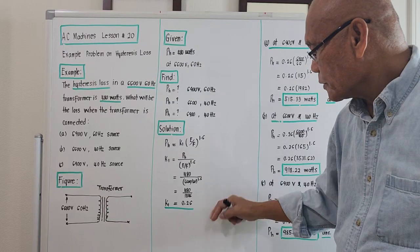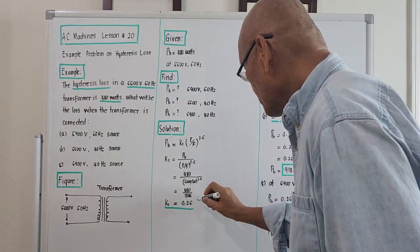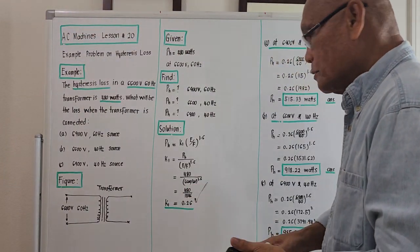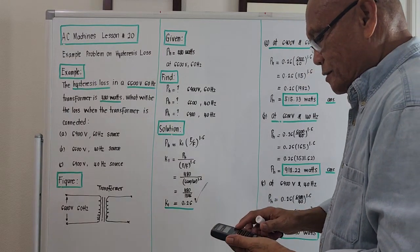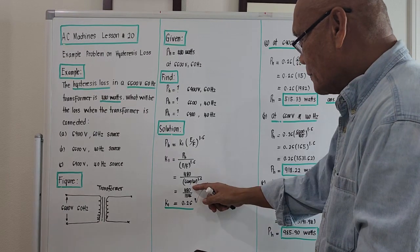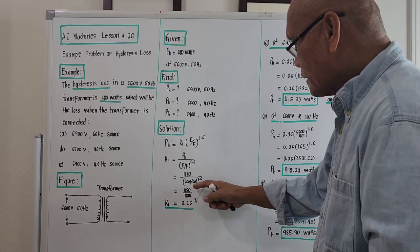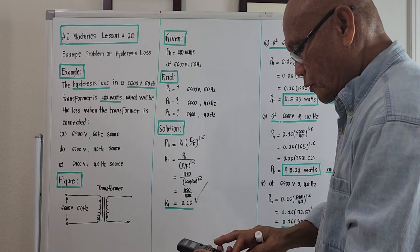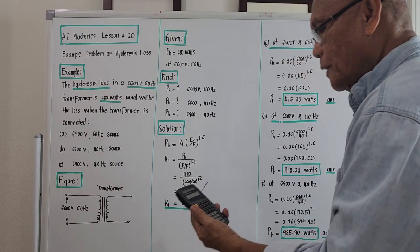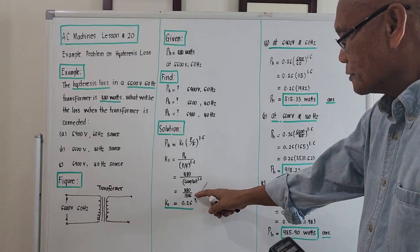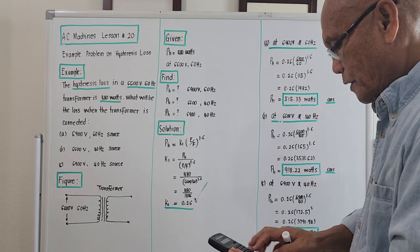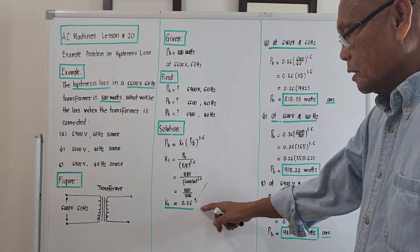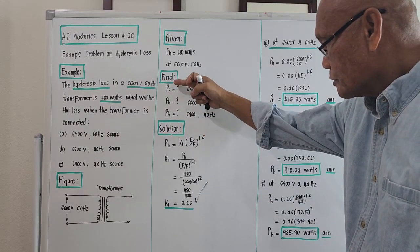480 divided by 1846 is approximately 0.26. What you do on the scientific calculator: display 6600 divided by 60 — the resulting ratio is 110. Raise that to the 1.6 using the y-to-the-x key, placing the exponent 1.6. The value is 1845.98, approximately 1846. Take the reciprocal of that and multiply by 480 — what comes out is 0.26002, or approximately 0.26. This is k1, and we need this value for the computation of hysteresis loss at the different voltages and frequencies.